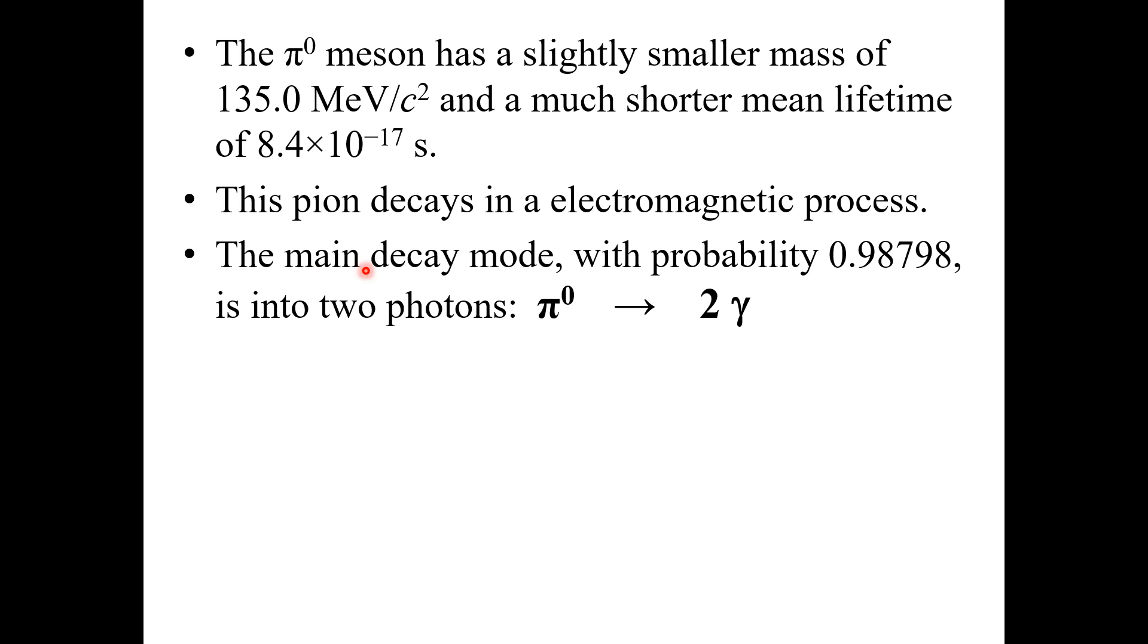The main decay mode, with probability 0.98798, is into two photons. That is, pi naught decays into two gamma rays or photons. This is the difference between the charged pions and neutral pions.